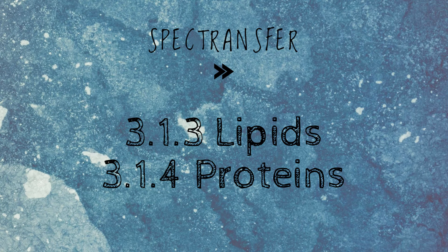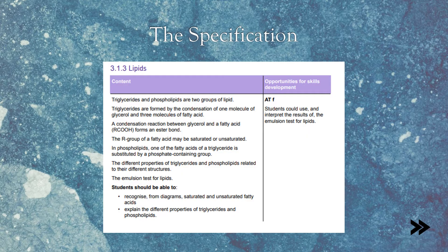Hey guys, welcome to SPECTransfer. Today we'll be talking about topics 3.1.3 lipids and 3.1.4 proteins from the AQA A-level biology specification. Let's have a quick look at the specification. We'll be giving you a general overview of triglycerides and phospholipids, also the formation of triglycerides, how their structures relate to their functions, and finally the emulsion test for lipids.